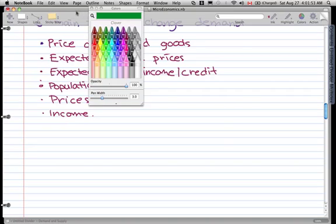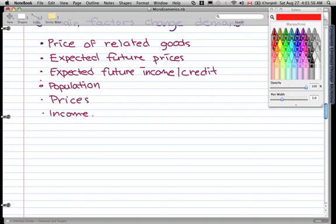Now let's bring up the colors. And let's use red. So the first point, the price of related goods. Two things you need to know.